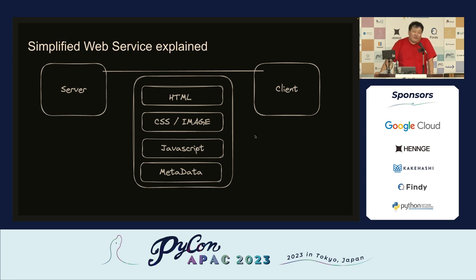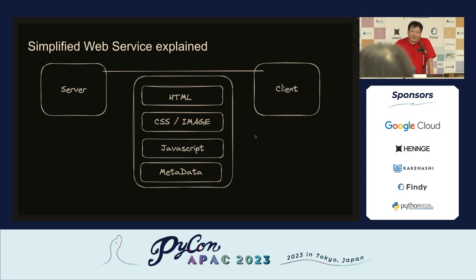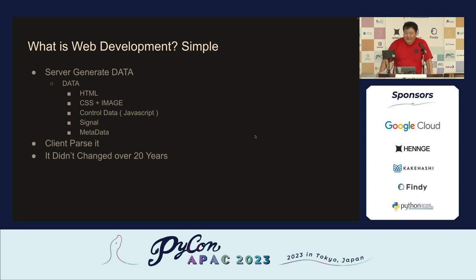As you know, we do web service almost every day. The server just passes the data and the client receives it. The server has just a bunch of data — it's a mix of HTML and CSS assets, JavaScript for client-side logic, and some metadata like cookies and headers. So it's very simple: the server generates data and the client receives it. This hasn't changed in about 20 years.